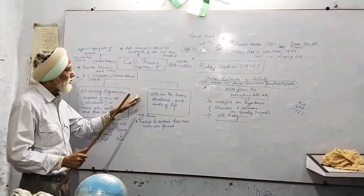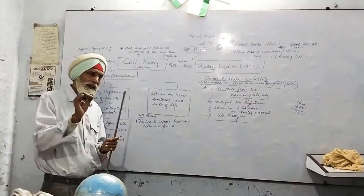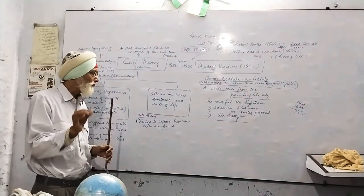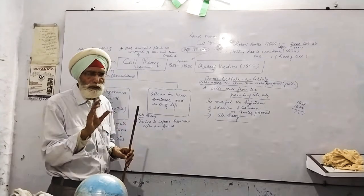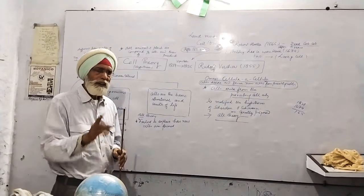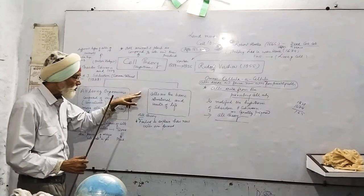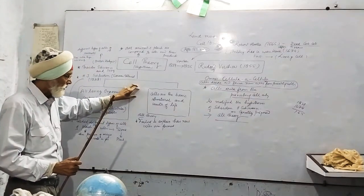And the second component of cell theory is cells are the basic structure and functional unit of life. As I yesterday told you, without structure life is not possible. If the structure is there, then the function is also there. These are the two most important tenets of the cell theory.